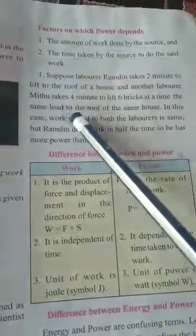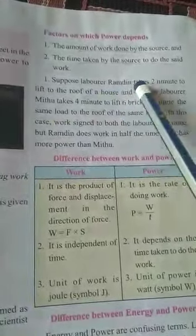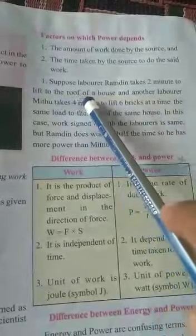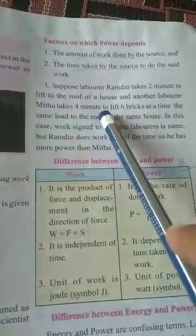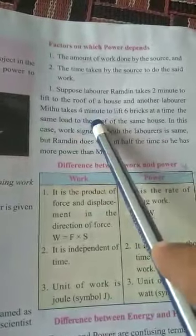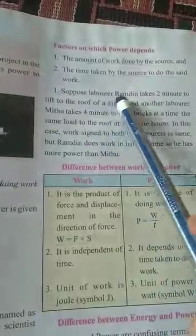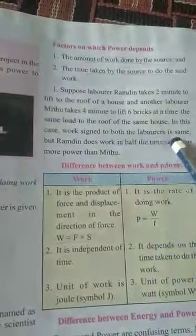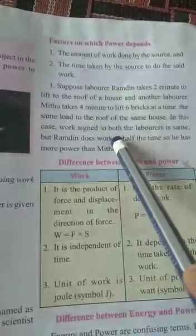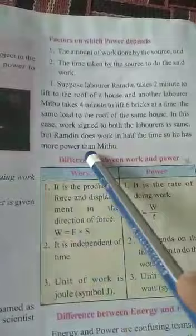Here is example regarding the laborers Ramuddin and Mithu. Ramuddin takes 2 minutes to lift the roof, whereas another laborer takes 4 minutes to lift. So, in this, to Ramuddin and Mithu, work done by both is same. But Ramuddin does the work in half the time, in 2 minutes. So, Ramuddin has more power than Mithu.